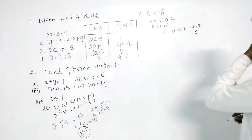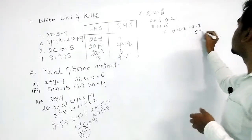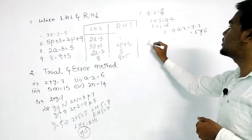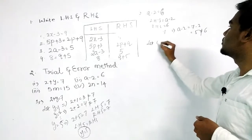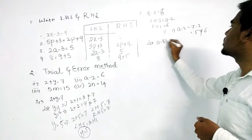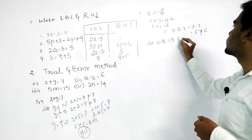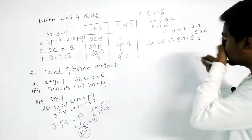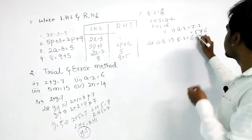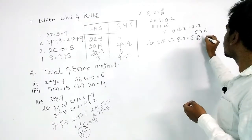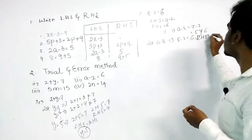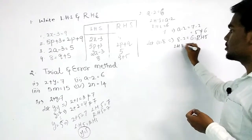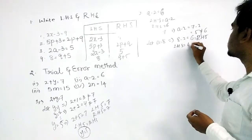Let a equal to 8: then 8 minus 2 equals 6, which equals the RHS. So LHS equals RHS, and the answer is a equals 8.